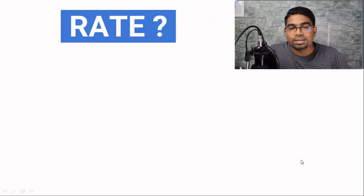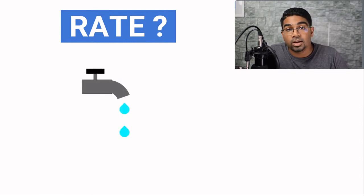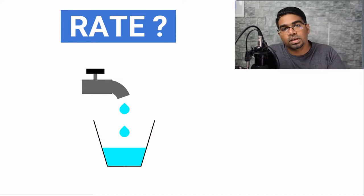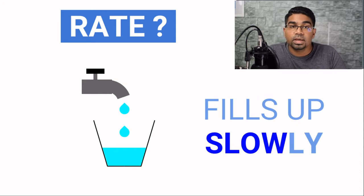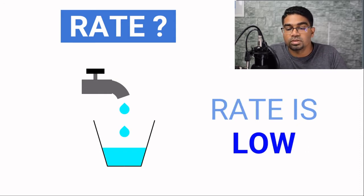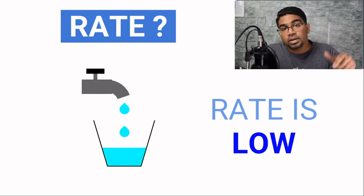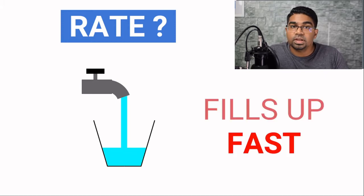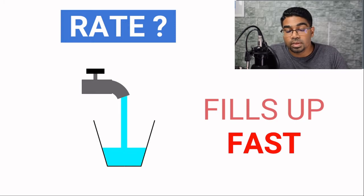Let's use a daily example. Let's say I turn on the tap such that water was only dripping out of the tap, and I collected the water in a cup. We could say that the cup was filling up slowly, so we'd say that the rate at which the cup is filling up is low. Then, let's say the same tap, I turn it on such that the water is coming out in a stream. Then we could say that the cup is filling up fast, it's filling up quickly, and we would say that the rate at which the cup is filling up is high.